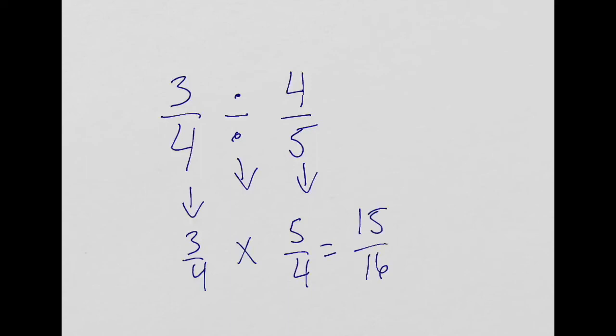If you have three-quarters divided by four-fifths, when you rewrite it, the first one stays the same, this flips, and so does the division sign. Three-quarters times five over four equals fifteen over sixteen. This does not reduce.